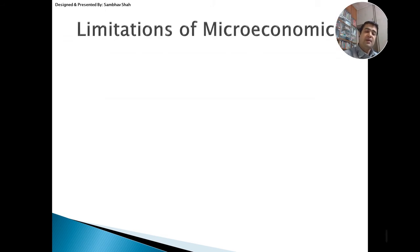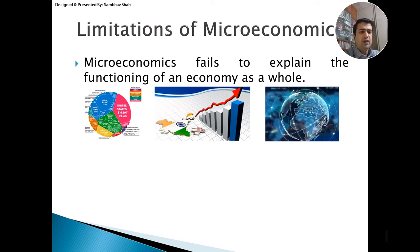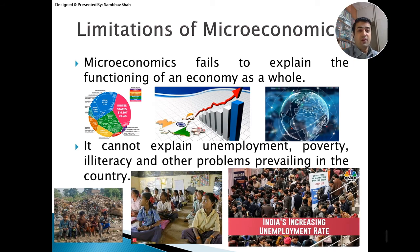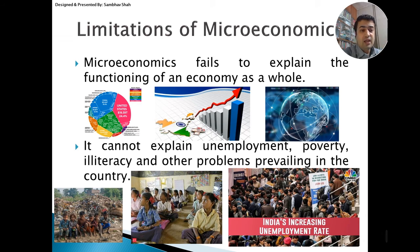There are some limitations to microeconomics — it cannot function at a macro level, only at a small individual level. Microeconomics fails to explain the whole functioning of the economy as a whole. It also cannot solve bigger problems of economics like unemployment, poverty, or illiteracy prevailing in a country. For all these problems, we have macroeconomics. The limitations of micro become the advantages of macro, and the limitations of macro can become the advantage of micro — both are supplements and complements to each other.